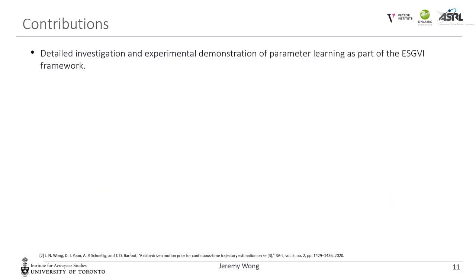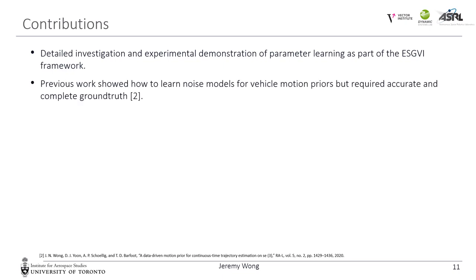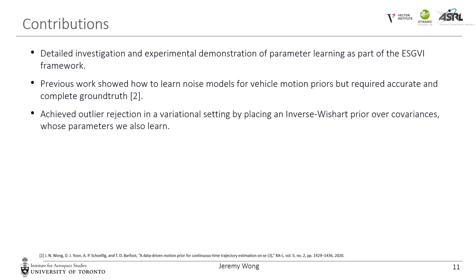The main contribution of this work is wrapping parameter learning into the ESGVI framework to solve a practical problem. We show how to learn motion and observation noise models without any ground truth. These noise models are often assumed to be either known or tuned by trial and error. In our previous work, we showed that we can learn noise models for vehicle motion priors, but required accurate and complete ground truth — that is, observations of a complete latent state. We also achieve outlier rejection in a variational setting by placing an inverse Wishart prior over measurement covariances, whose parameters we also learn.